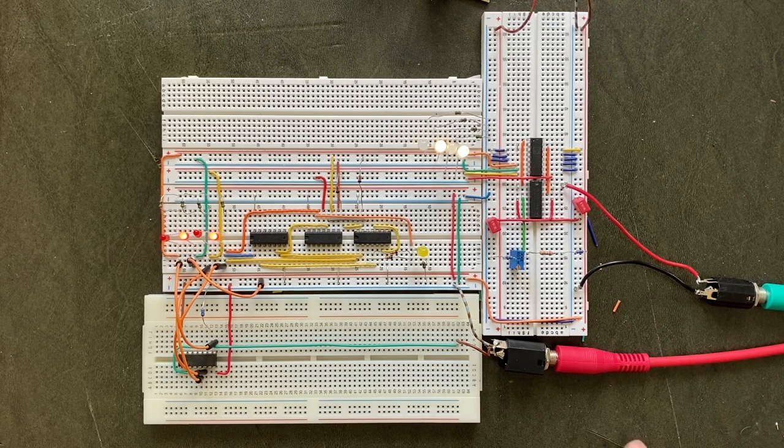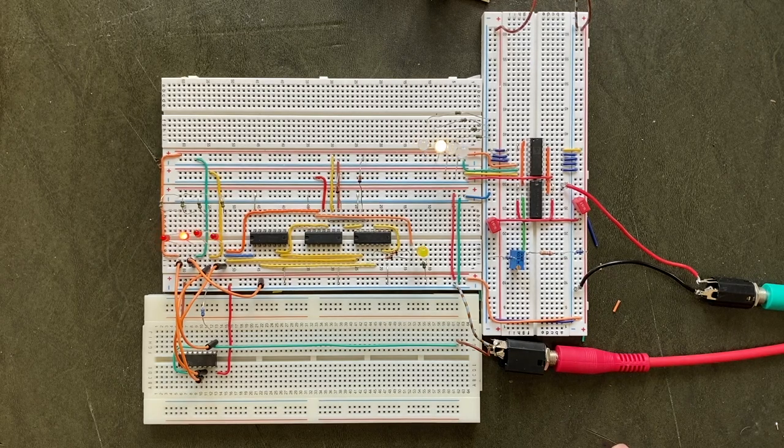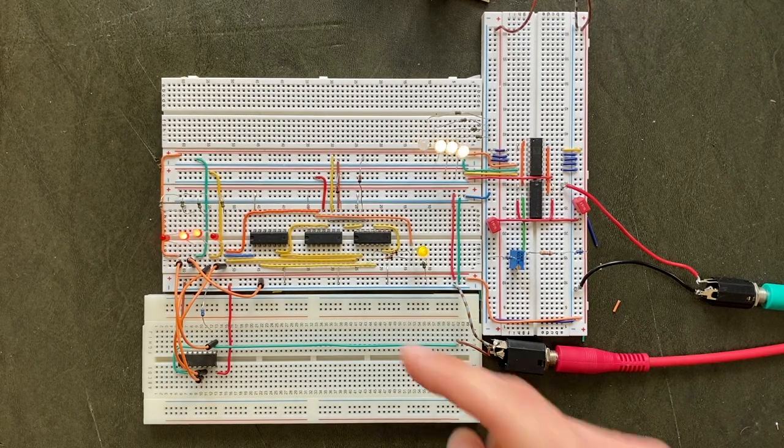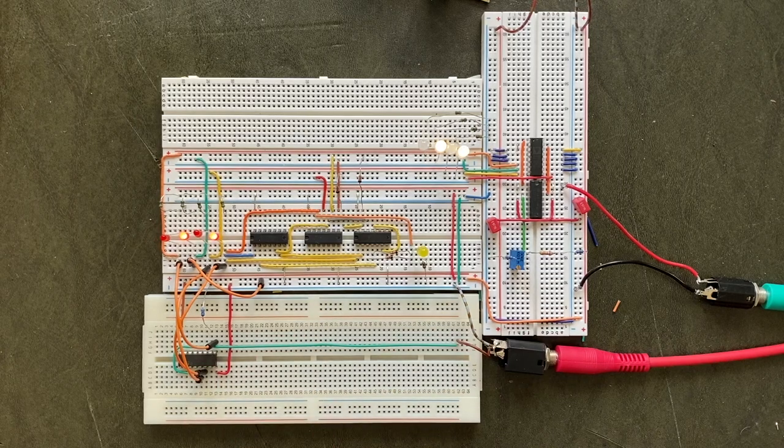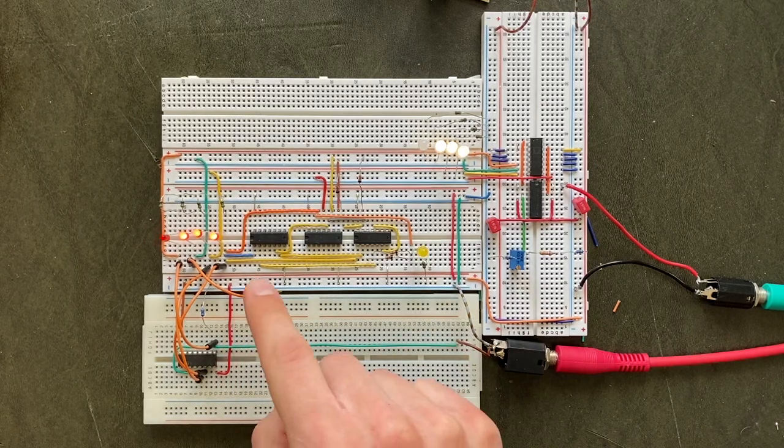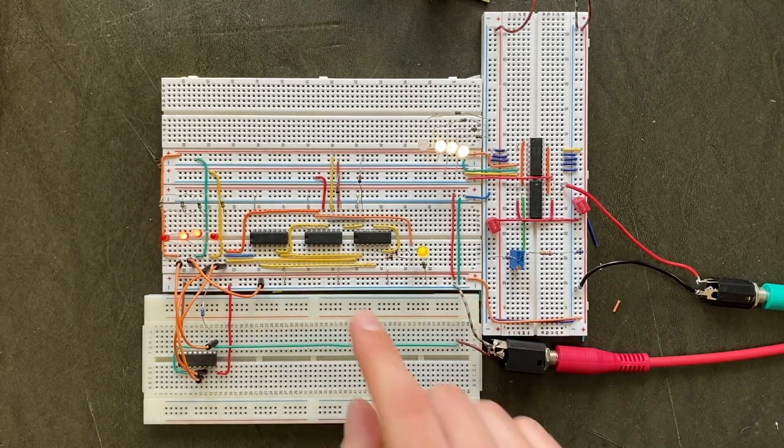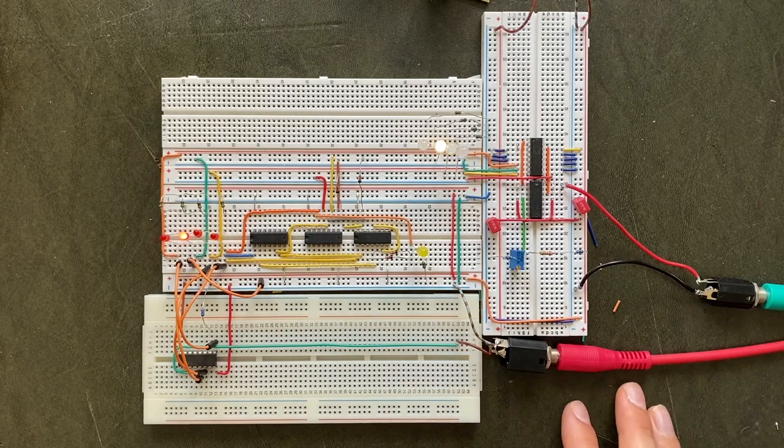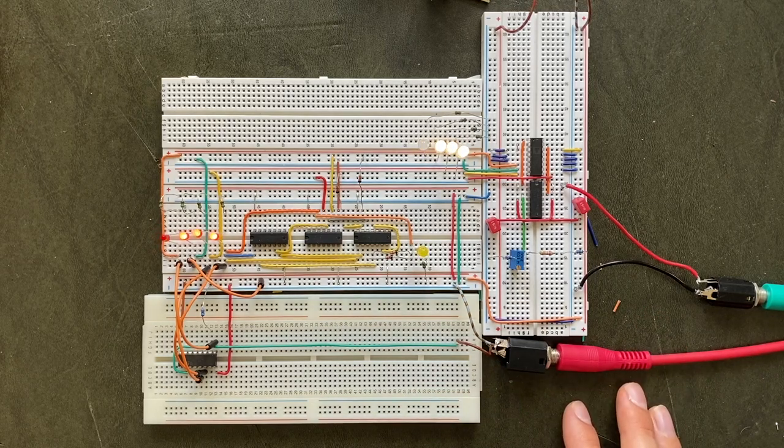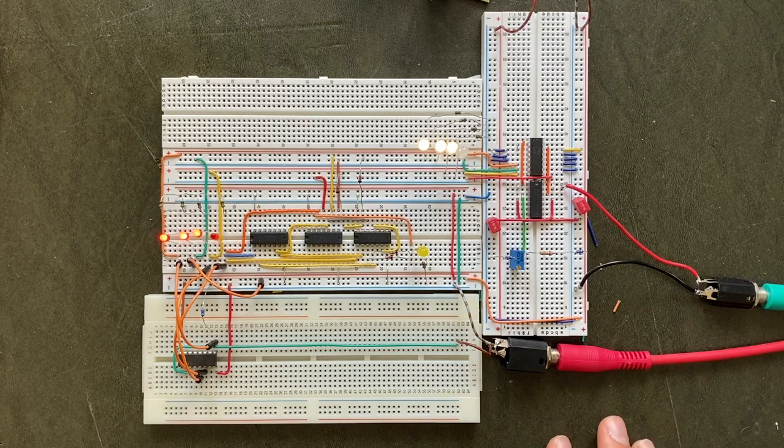If you want to change the root note of the arpeggio, there's also the option of setting one of the processor's inputs high permanently. If I take input 3, for example, and just connect it straight to the power rail, the lowest note of the arpeggio will be an E. As you can hear, the changed root note really gives it a different overall feel.